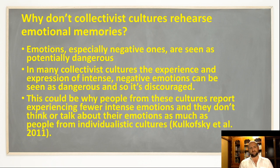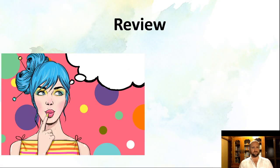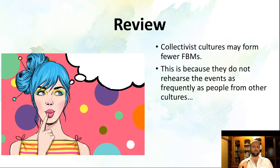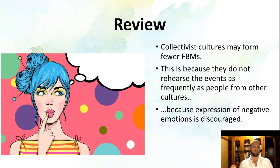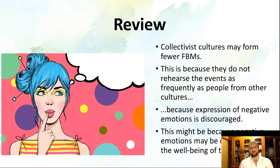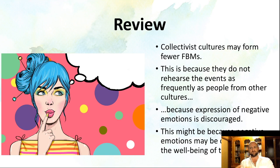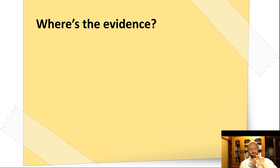So that different emphasis on expressing emotion influences the rehearsal of the flashbulb memory details, which affects formation. To recap: collectivist cultures may form fewer flashbulb memories because they don't rehearse events as frequently, because the expression of negative emotion is discouraged. This may be because one core component of collectivist culture is the emphasis on the group — group solidarity, group harmony, and the well-being of the group — and expressing negative emotions might be seen to disrupt that.